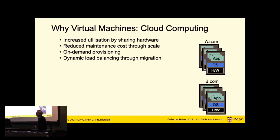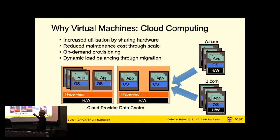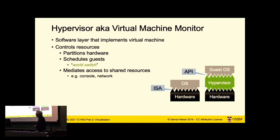What really drove things was the cloud. If everyone runs their own computing center, that's very inefficient — you provision for maximum usage but average usage is much less. Everyone needs competent admins, which is expensive. It's much easier to do this at scale. So instead of every company running their own compute center, you have a centralized service providing virtual machines, with very skilled system management, good resource utilization, and reduced costs overall.